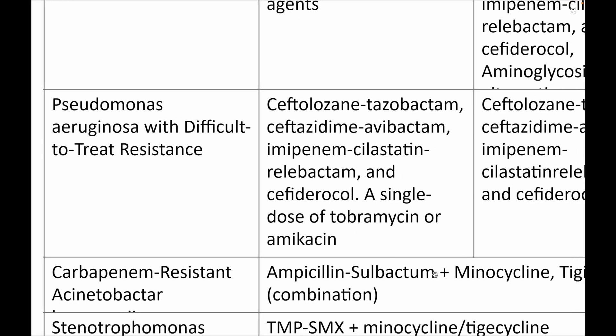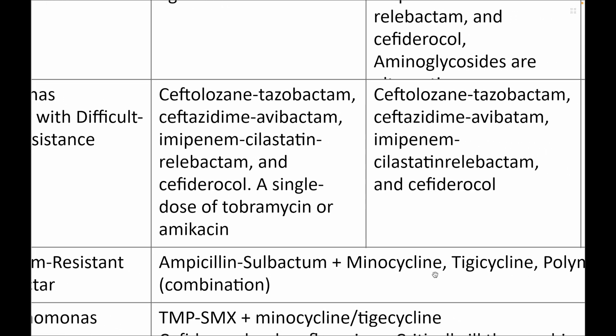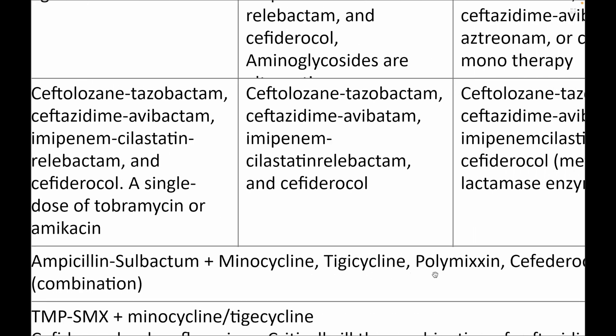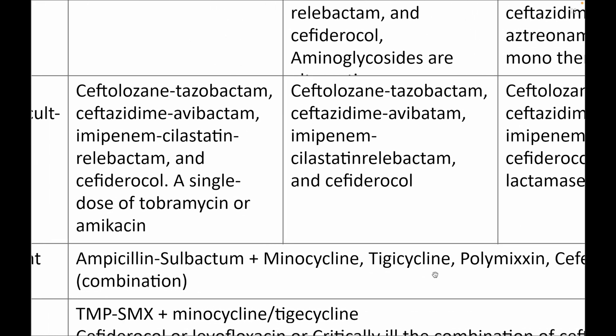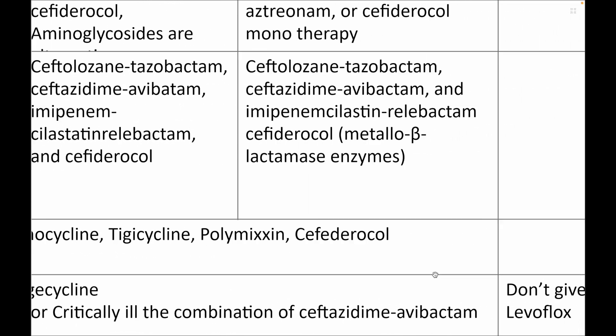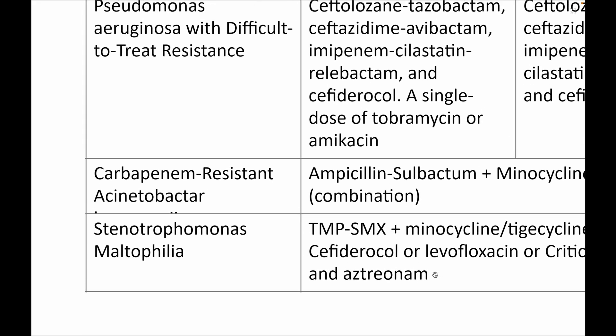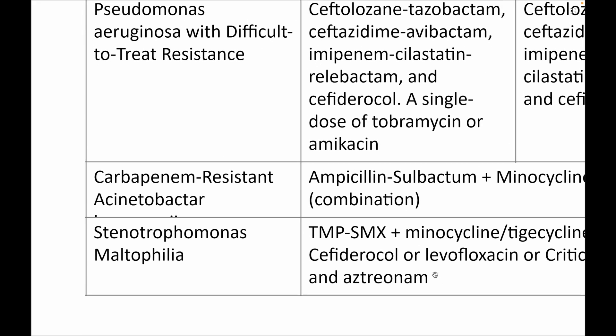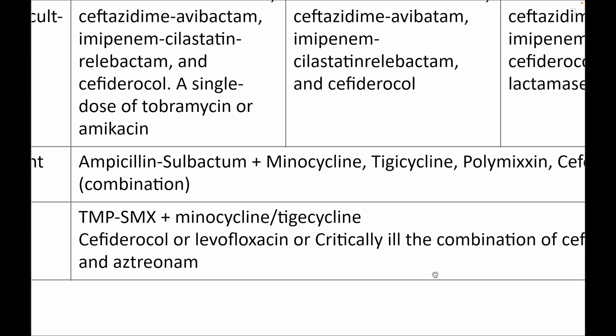Next is difficult-to-treat resistance Pseudomonas. The drug of choice for uncomplicated UTI, complicated UTI, and outside infections is ceftolozane-tazobactam in all three cases. Apart from that, you can use the newer BL/BLI agents. For uncomplicated UTI, you can also give a single dose of aminoglycoside, which is equally good. Cefiderocol is again a reserve agent.